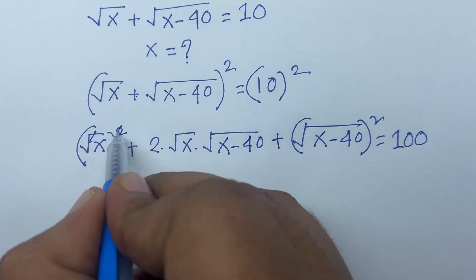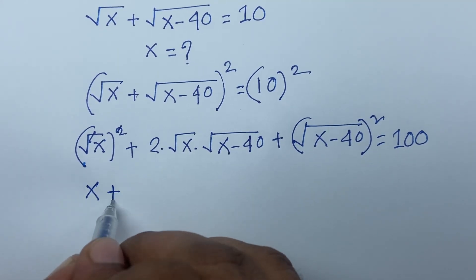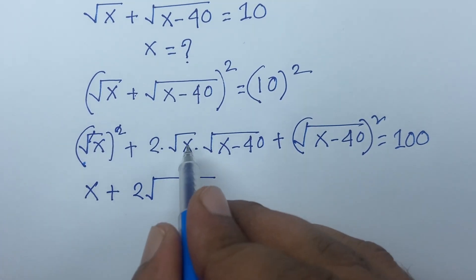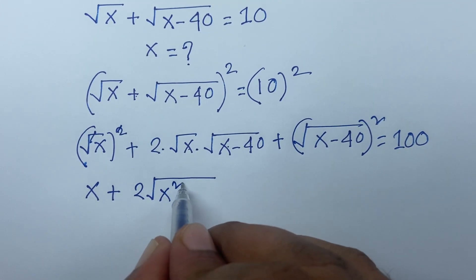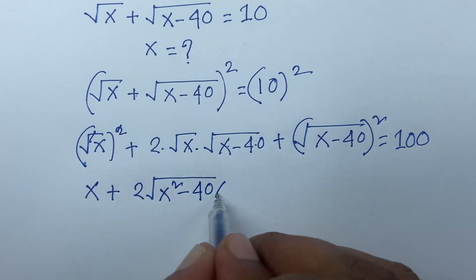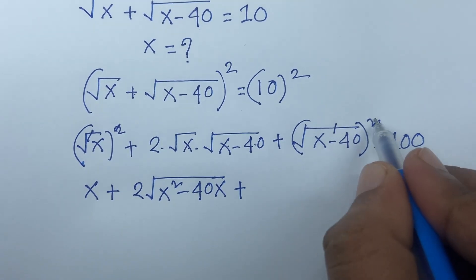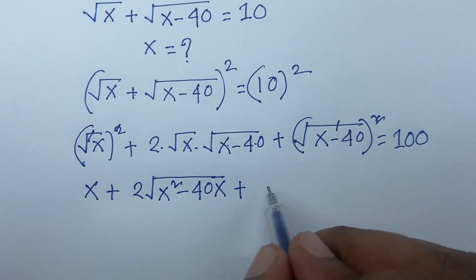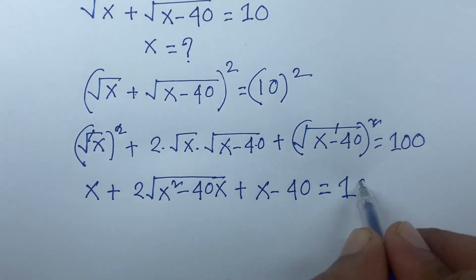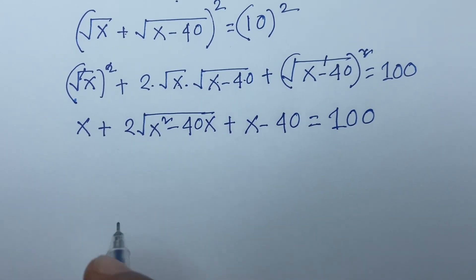The square roots cancel: we get x plus 2 times square root of x times x minus 40 — that is square root of x squared minus 40x — plus x minus 40 is equal to 100.